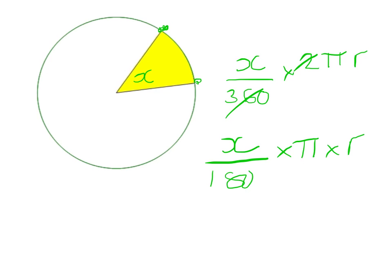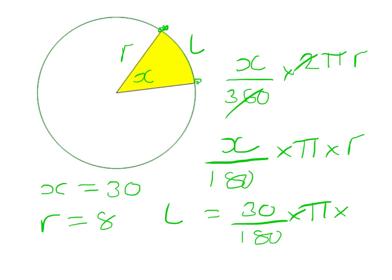In any question, the radius will have to be given to work this out. So suppose x was 30 and the radius was 8. Then the arc length, we'll call that L, would equal 30/180 × π × 8. You could do the rest on your calculator.